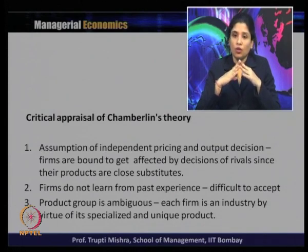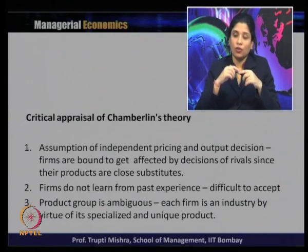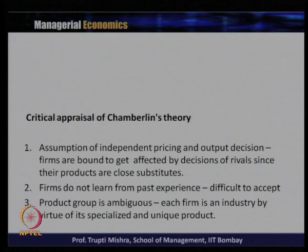Another criticism is that the product group is ambiguous. Each firm is an industry by virtue of its specialized and unique product, and within the industry there is again discussion about the product group — those producing similar or identical kinds of products. There is ambiguity because each firm in monopolistic competition produces a different product from others in the market, deciding its price and output independently on the basis that its product is different.